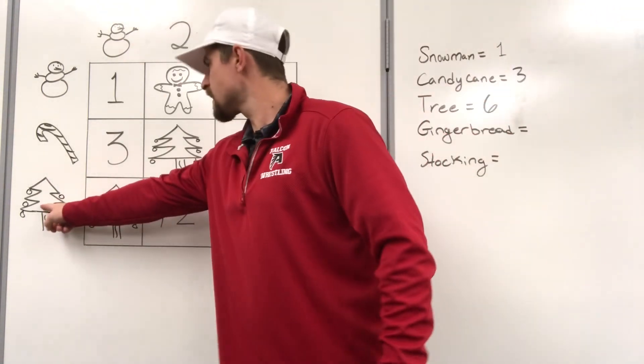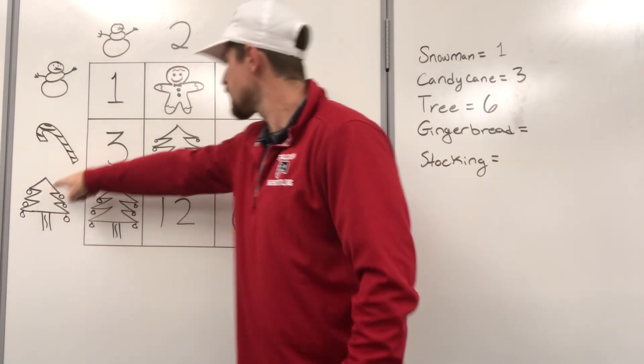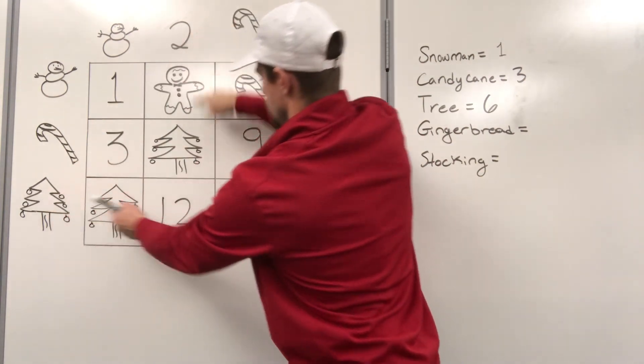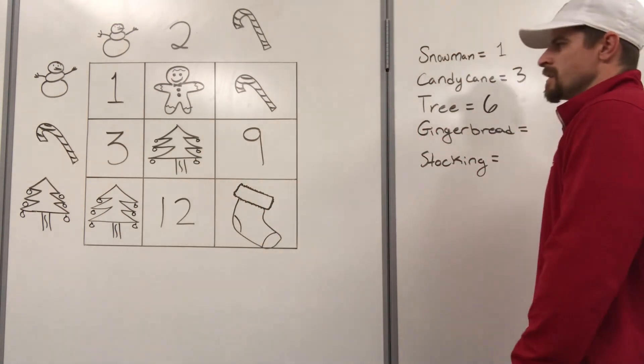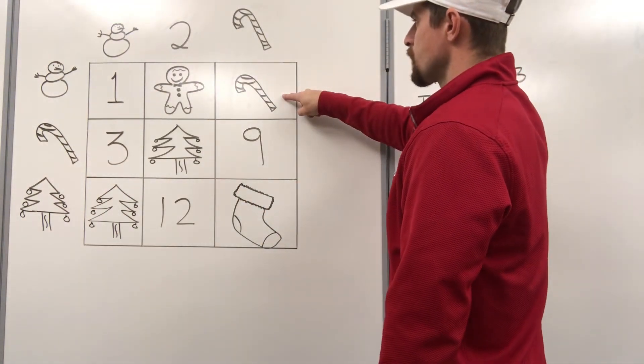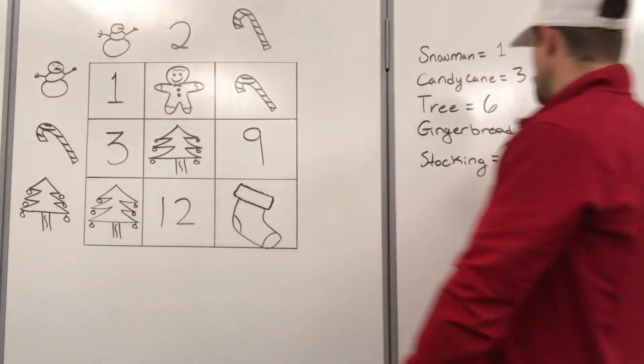So now six times one makes six. Six times two should make a Christmas tree, correct. It is a six. Good. We know a candy cane is a three. Three times one. What are we missing here? We're missing gingerbread. We don't know what gingerbread is yet.